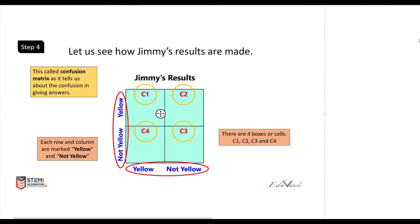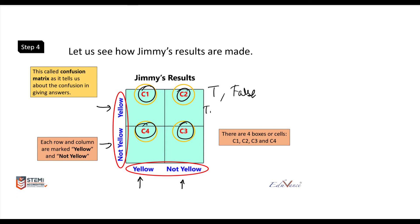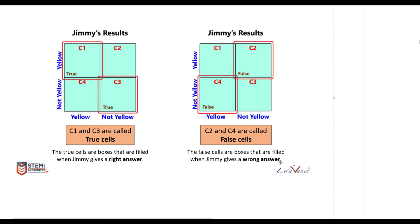The result table has four cells — C1, C2, C3, C4 — with two rows and two columns. The two rows are labeled yellow and not yellow, and the two columns are also labeled yellow and not yellow. The four cells are marked as true cells or false cells. There is a technical term for this result table: it's called a confusion matrix, but let's just call it a result table for now.